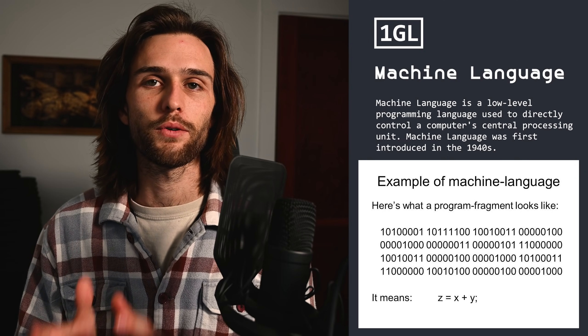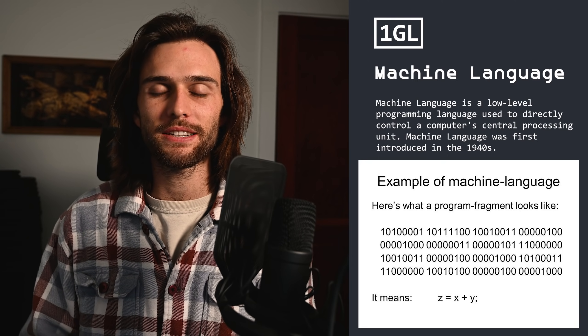The first generation programming languages are machine languages, which were used to program the first generation computers back in the 1940s. It was done by putting code into the front panel switches of these systems, going directly to the CPU — no compiler, no assembler. It was machine language, made up of ones and zeros, binary. While it's very easy for the machine to understand, it was a lot more difficult for humans. However, this made for very fast and efficient code since it was inputted directly into the CPU.